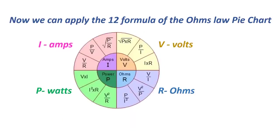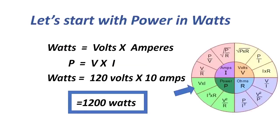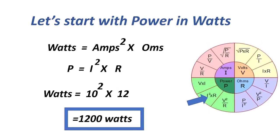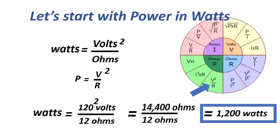Now let's proceed to the Ohm's Law pie chart — we can apply the 12 formulas. Starting with power in watts: P equals V times I equals 120 volts times 10 amperes equals 1,200 watts. Next formula: P equals I² times R equals 10² times 12 equals 1,200 watts. Next: P equals V² over R equals 120² over 12 equals 1,200 watts.